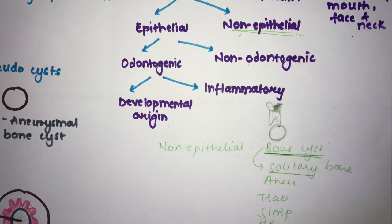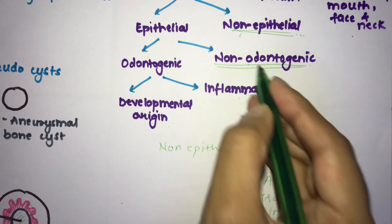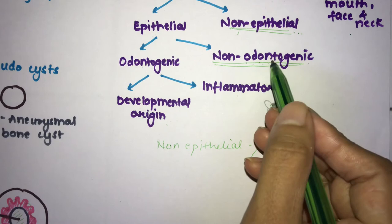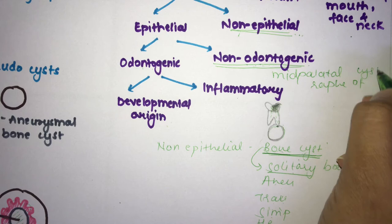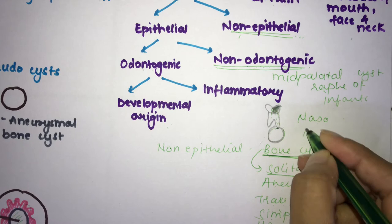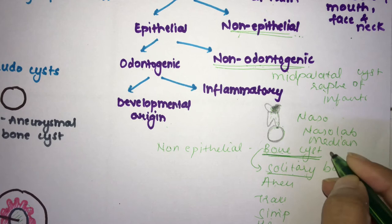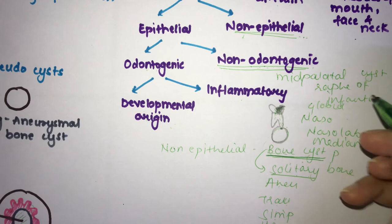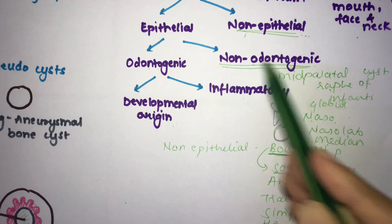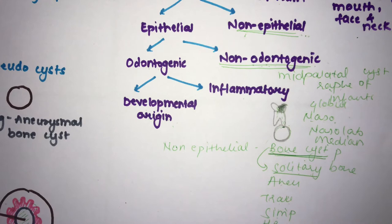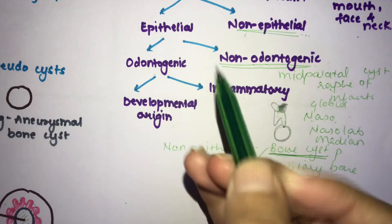For non-odontogenic epithelial cysts, the examples are: mid-palatine raphe cyst of infants, nasopalatine duct cyst, nasolabial cyst, median palatal cyst, and globulomaxillary cyst. Their names — nasolabial, nasopalatine, mid-palatine — have no relation to teeth, which is why they are classified as non-odontogenic.